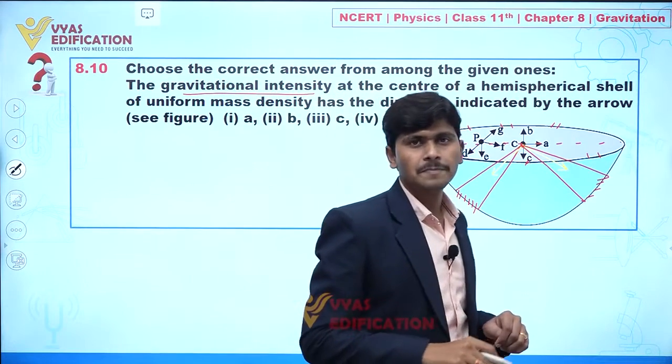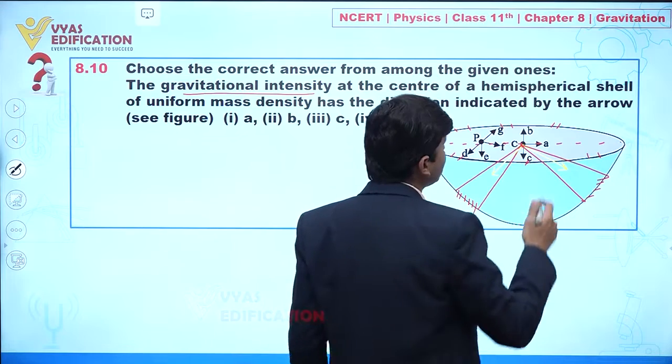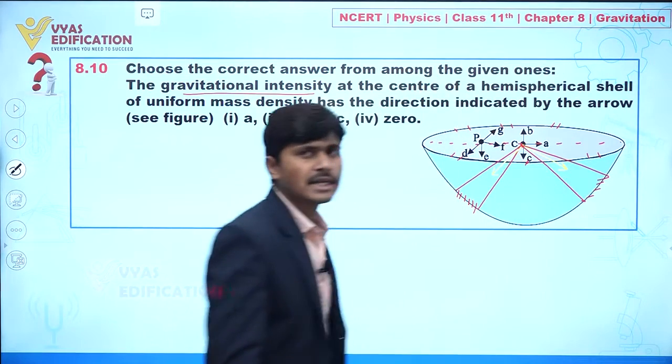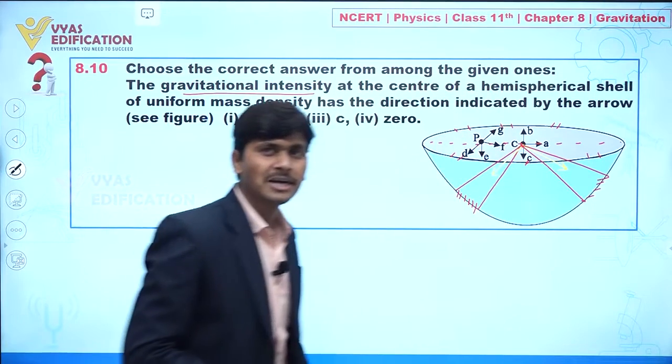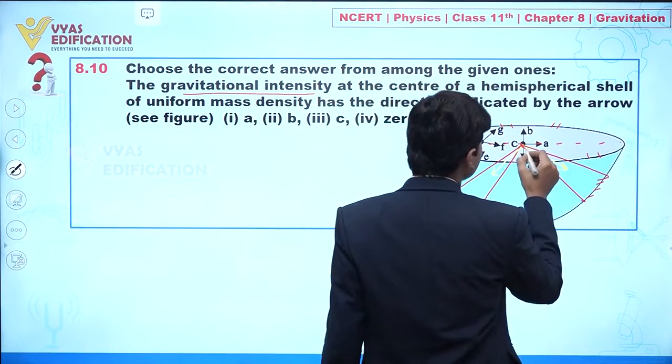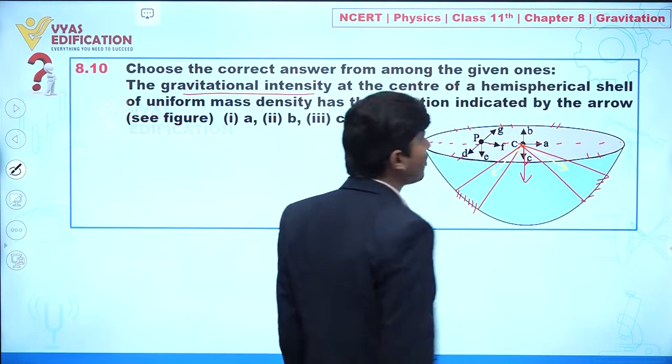So now we can say if we are talking about all the directions, the horizontal component will be cancelled out, and we will find net resultant intensity in the downward direction.